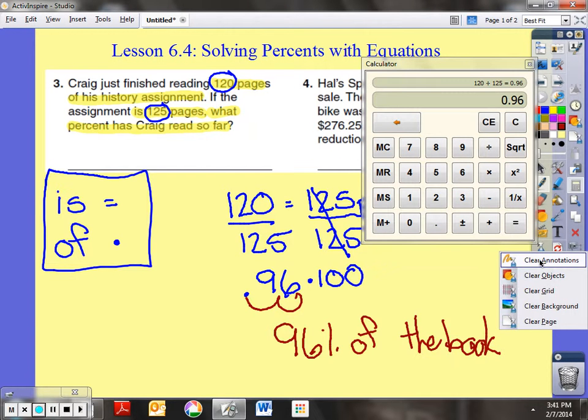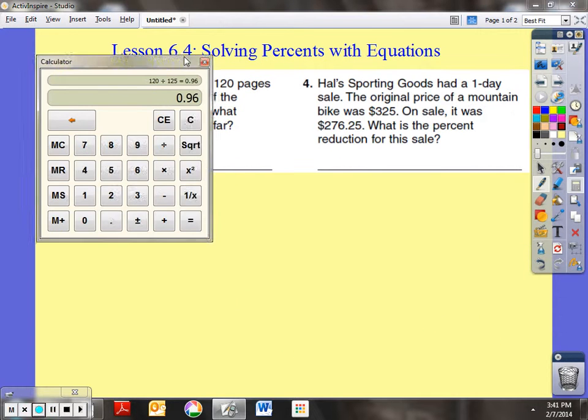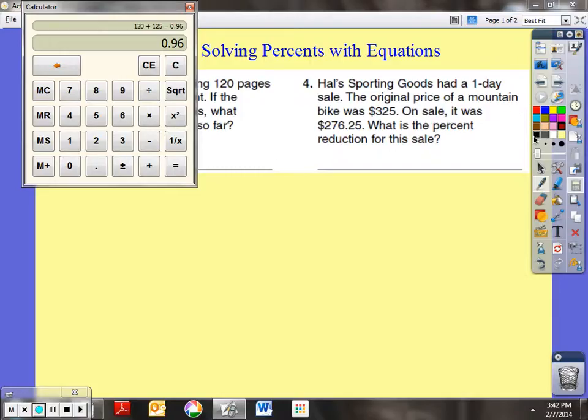If I take a look at another one, Hal's Sporting Goods had a one-day sale. The original price of a mountain bike was $325. On sale, it was $276.25. What is the percent reduction for this sale? Let's see here. What is the percent reduction? So how much do they reduce it from this price to this price?